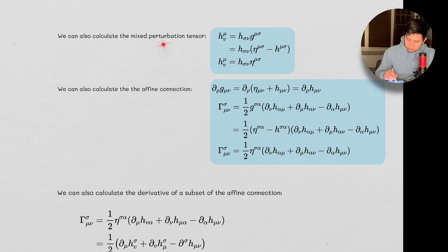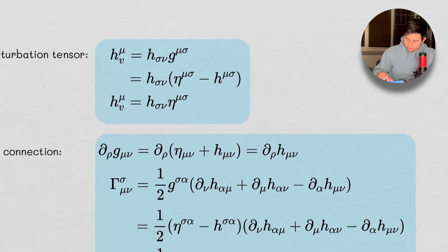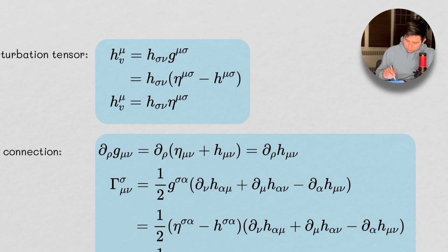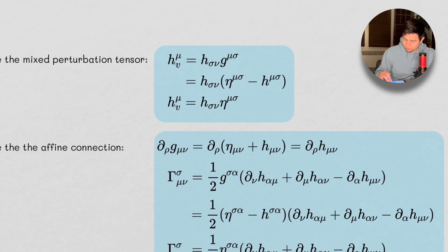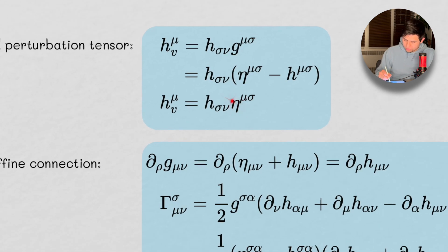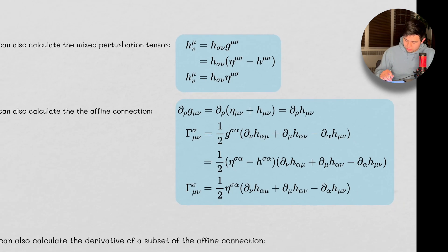We can also calculate mixed perturbation tensors. If we wanted to calculate a mixed index version, we just raise with the metric. When we raise with the metric, one term is second order and therefore small and negligible, so we get the result that we raise with the Minkowski metric.